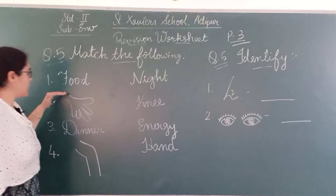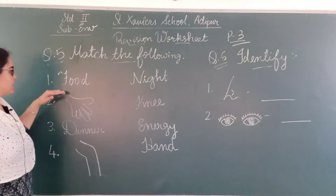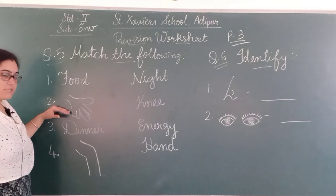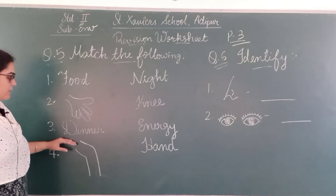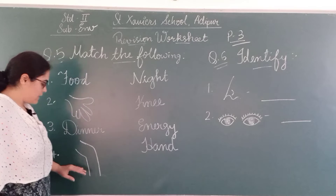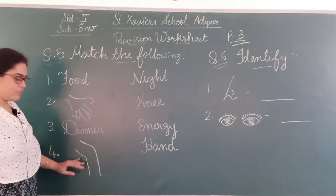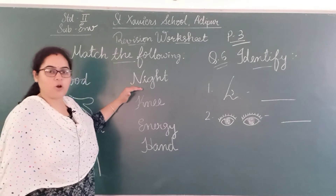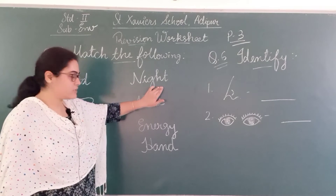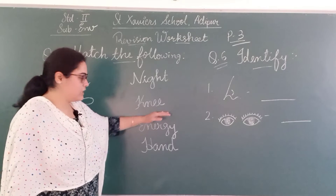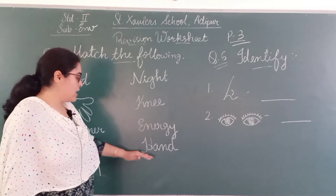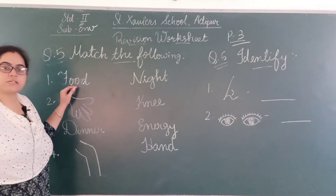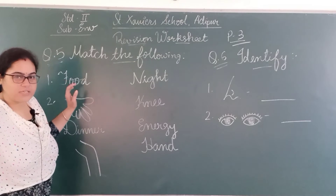Match the following neatly. First one: F-O-O-D, food, means khana. This is hand. Third one is D-I-N-N-E-R, dinner. And this is knee. So column A has: food, hand, dinner, and knee. Column B has: N-I-G-H-T night, K-N-double-E knee, E-N-E-R-G-Y energy, and H-A-N-D hand.